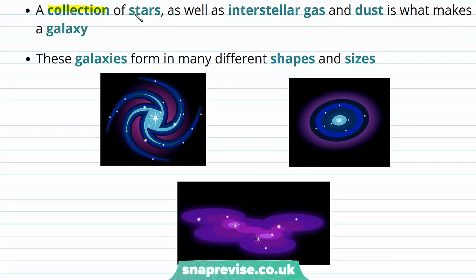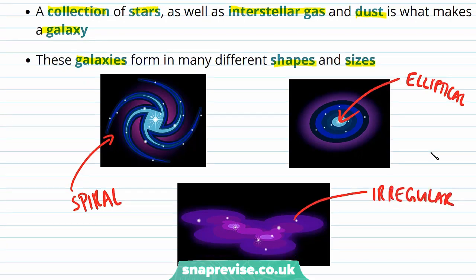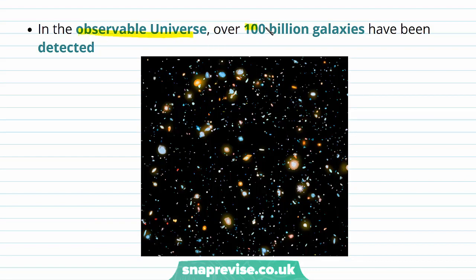We define a galaxy as a collection of stars as well as interstellar gas and dust. Galaxies can form in many different shapes and sizes. The Milky Way has a round bright centre with spiral arms, making it a spiral galaxy. We can also have elliptical galaxies, shaped like ellipses, and irregular galaxies too. In the observable universe, over 100 billion galaxies have been detected — and even an image showing many galaxies represents only a tiny fraction of all those that exist.